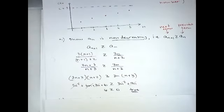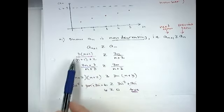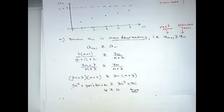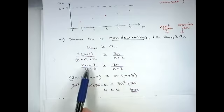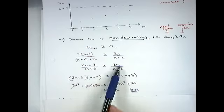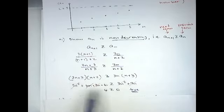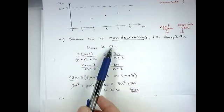Starting with a_n = 3n/(n+2), we get a_{n+1} by replacing n with n+1, giving 3(n+1)/((n+1)+2). Since n is positive, we don't have to worry about flipping the inequality. After multiplying across and FOILing out, a bunch of terms cancel and we're left with 6 ≥ 0, which is always true. This means a_{n+1} ≥ a_n, so we have shown that a_n is a non-decreasing sequence.